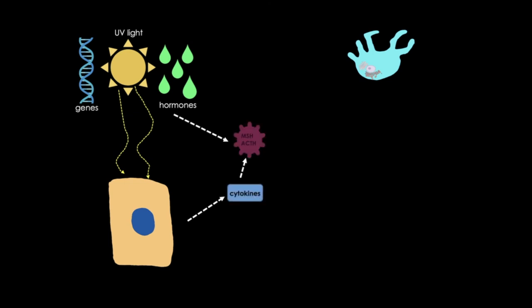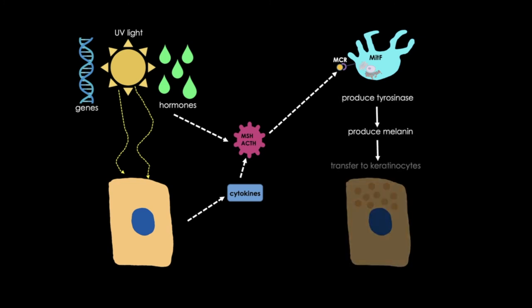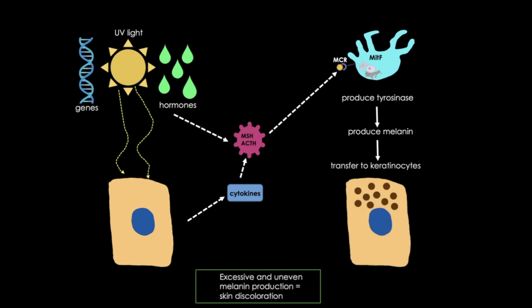One pathway that these signals converge on involves two hormones, ACTH and melanocyte-stimulating hormone—these are pituitary hormones that bind to melanocortin receptors on melanocytes. No matter how you get to this step, MITF is a key regulator of melanin biosynthesis. Ultimately, we get more melanin. This is a very complex pathway, and of course things can go wrong, resulting in uneven pigment production and skin discoloration.